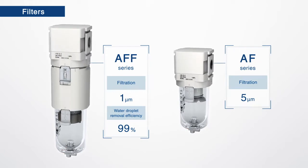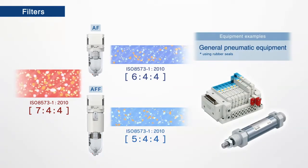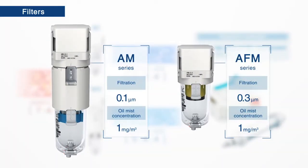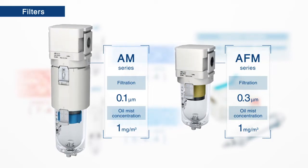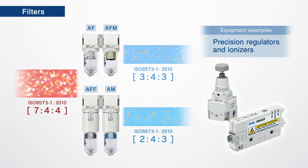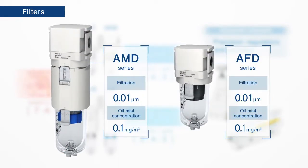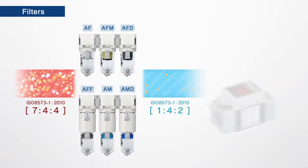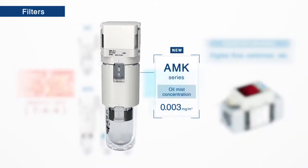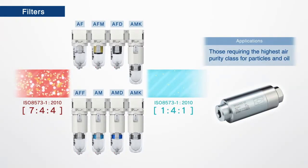AF and AFF filters are used with general pneumatic equipment like valves and cylinders. AF and AM filters are used with precision regulators and ionizers. AF and AMD filters are used with equipment like digital flow switches. The AMK is used where the highest air purity class for particles and oil is required.